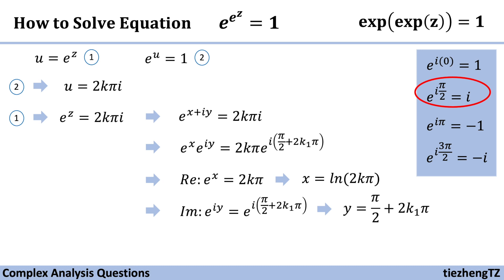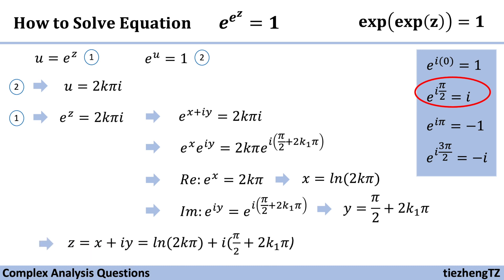Now we have x and y, so we can substitute: z = x + iy = ln(2kπ) + i(π/2 + 2k₁π), where k and k₁ are integers.